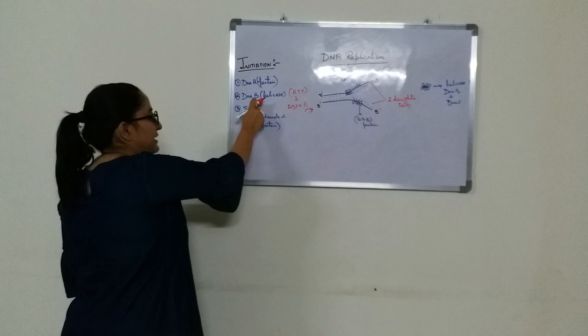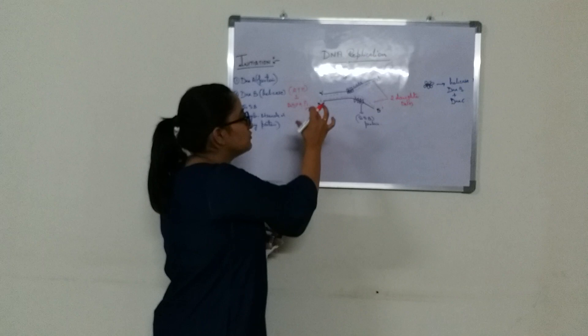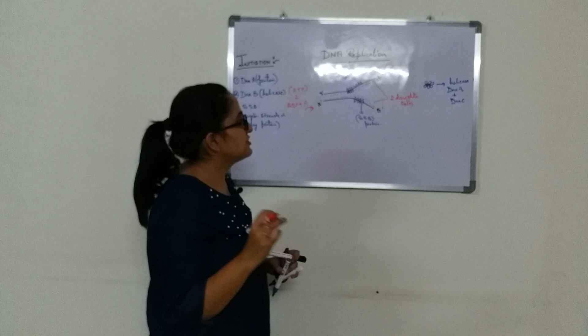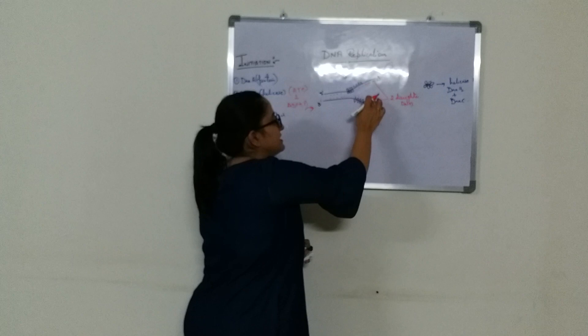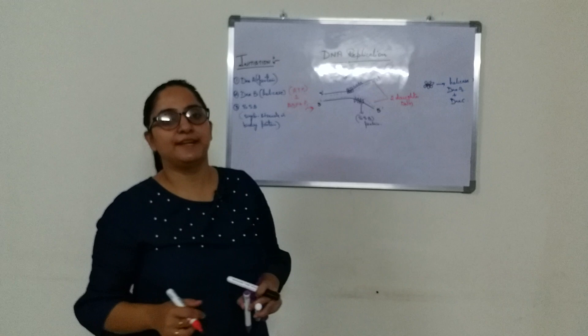DNA B helicase utilizes ATP, hydrolyzing it to ADP with release of a phosphate group — that is the energy source required by DNA B helicase to separate both strands. This concludes the initiation process of DNA replication. The elongation part, where new DNA strands will be formed, will be covered in the next video. Please subscribe to my channel!